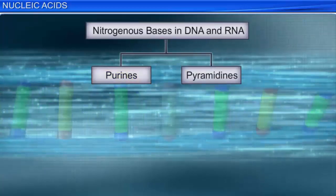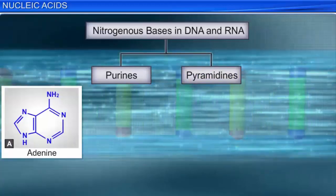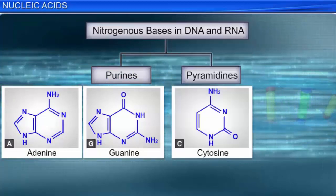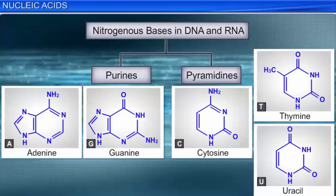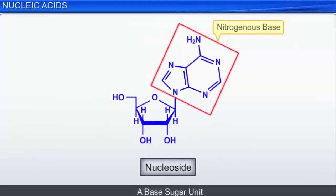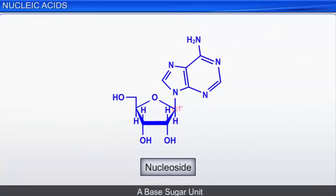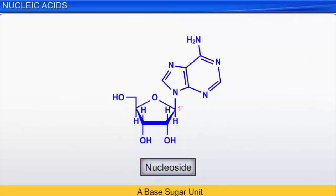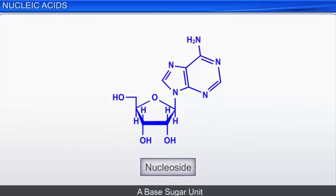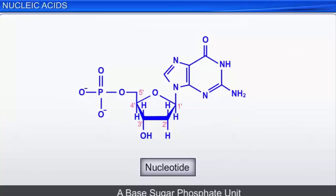A nitrogenous base attached to the C1' carbon of the sugar is called a nucleoside, or a base-sugar unit. The nucleoside adenosine is shown here. We number the sugar carbons in nucleosides as 1', 2', and so on. A pentose sugar with a nitrogen base at the C1' carbon and a phosphate group at the C5' position is called a nucleotide — a base-sugar-phosphate unit. In the nucleotide structure of DNA, there is only one hydroxyl group attached to the sugar ring, while there are two hydroxyl groups attached to the sugar ring of RNA.